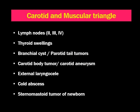The next is carotid and muscular triangle. Again, lymph nodes are the most common swellings in the carotid and muscular triangle also. Level 2, level 3, and level 4 neck nodes are found in the carotid and muscular triangle. Level 2 is also called upper, level 3 middle, and level 4 lower jugular lymph nodes, because they are in relation to the internal jugular vein.